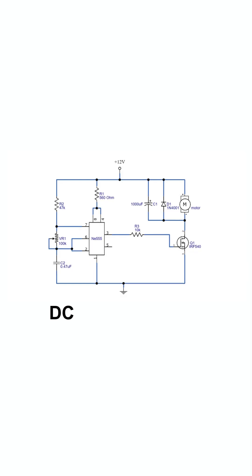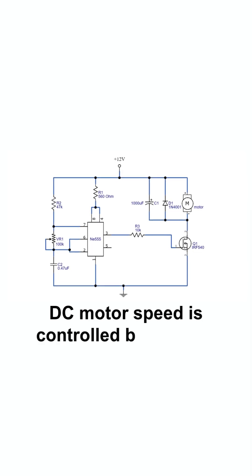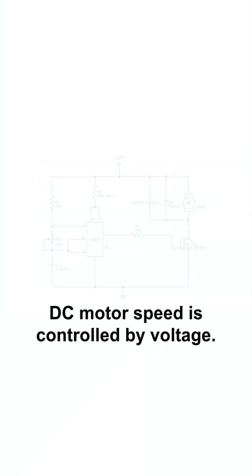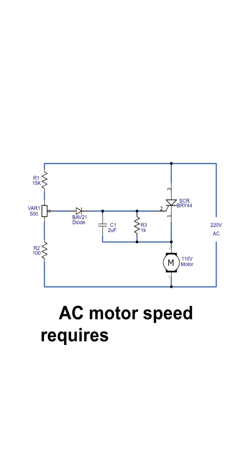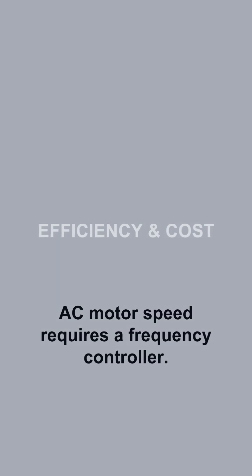Speed control. DC motor speed is controlled by voltage. AC motor speed requires a frequency controller.